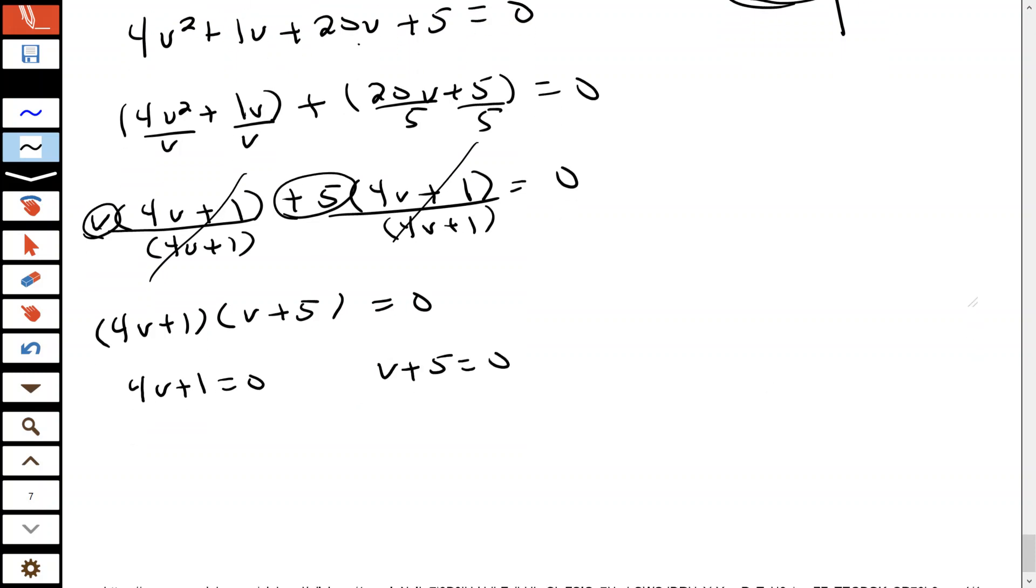Anytime you have that equal to zero, once you get it completely factored, you need to set each one of your factors equal to zero and then solve the equation. So let's subtract one from each side and divide by four. That's -1/4. Then over here, subtract five from each side.